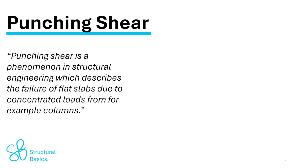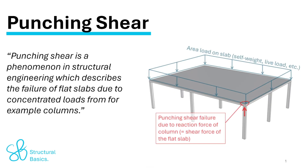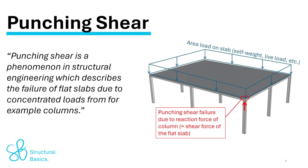Punching shear is a phenomenon in structural engineering which describes the failure of flat slabs due to concentrated loads from, for example, columns.